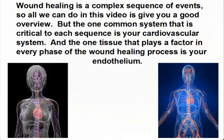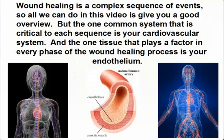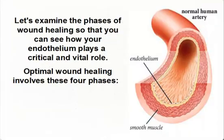Wound healing is a complex sequence of events, so all we can do in this video is give you a good overview. The one common system that is critical to each sequence is your cardiovascular system, and the one tissue that plays a factor in every phase of the wound healing process is your endothelium. Let's examine the phases of wound healing so that you can see how your endothelium plays a critical and vital role.